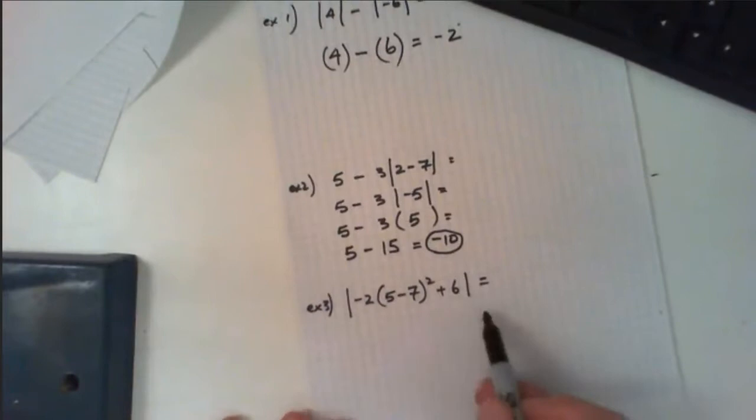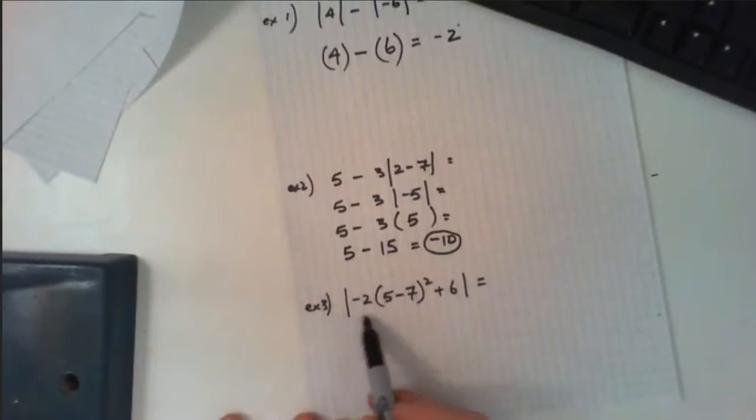The third example is a little more complicated with different brackets and exponents. Remember, when working inside the absolute value, follow the order of operations. Working inside, 5 minus 7 happens to be negative 2.